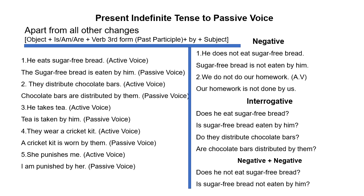For example: 'He eats sugar free bread۔' یہاں 'he' اور 'eats' کے درمیان کوئی helping verb نہیں، یہ first form of the verb ہے، تو یہ present indefinite tense ہے۔ Object 'sugar free bread' آگے آئے گا، 'he' ایک ہے تو 'is' لگے گا، 'eat' کی third form 'eaten' ہے اور 'by' کا اضافہ ہو گا۔ Passive voice: 'Sugar free bread is eaten by him۔'